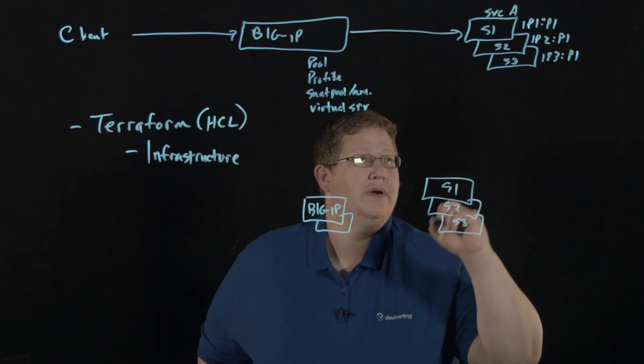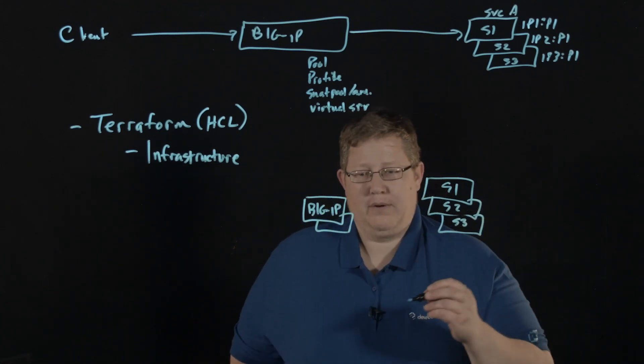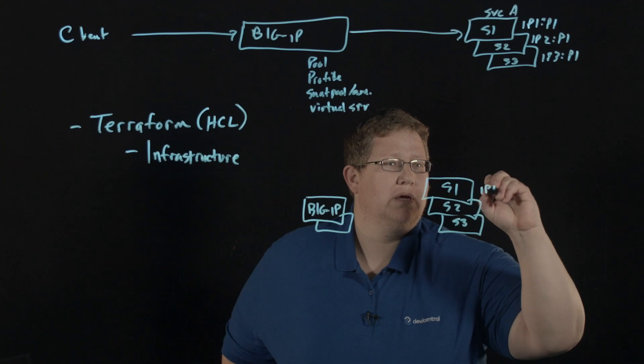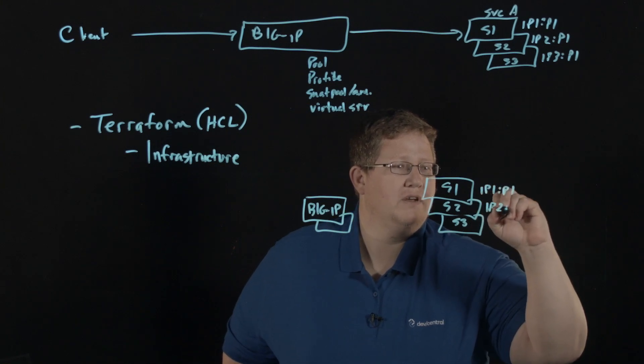S1, S2, S3. Then it's going to dynamically create these IPs, so we don't really know what they are, nor do we particularly care.